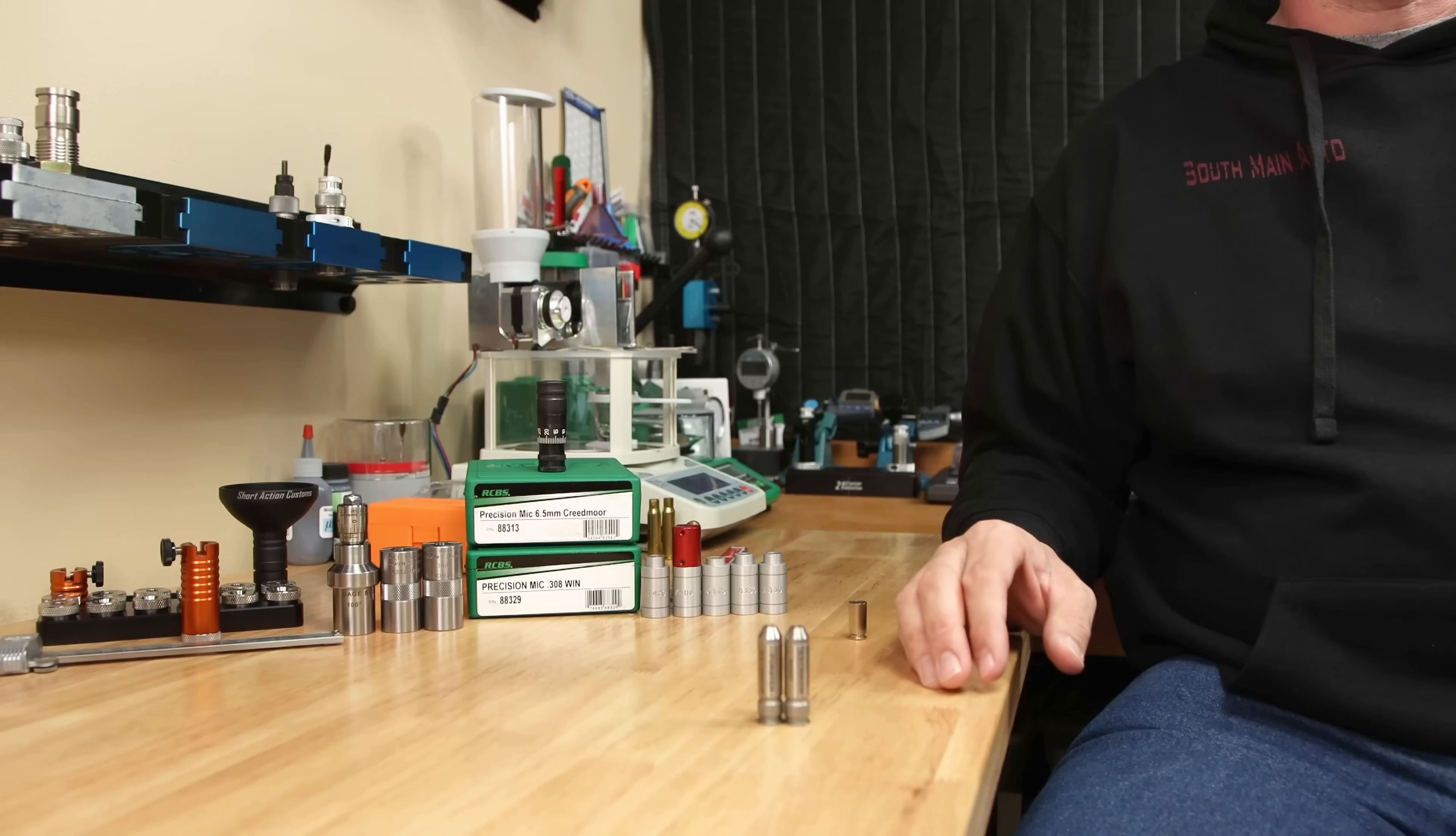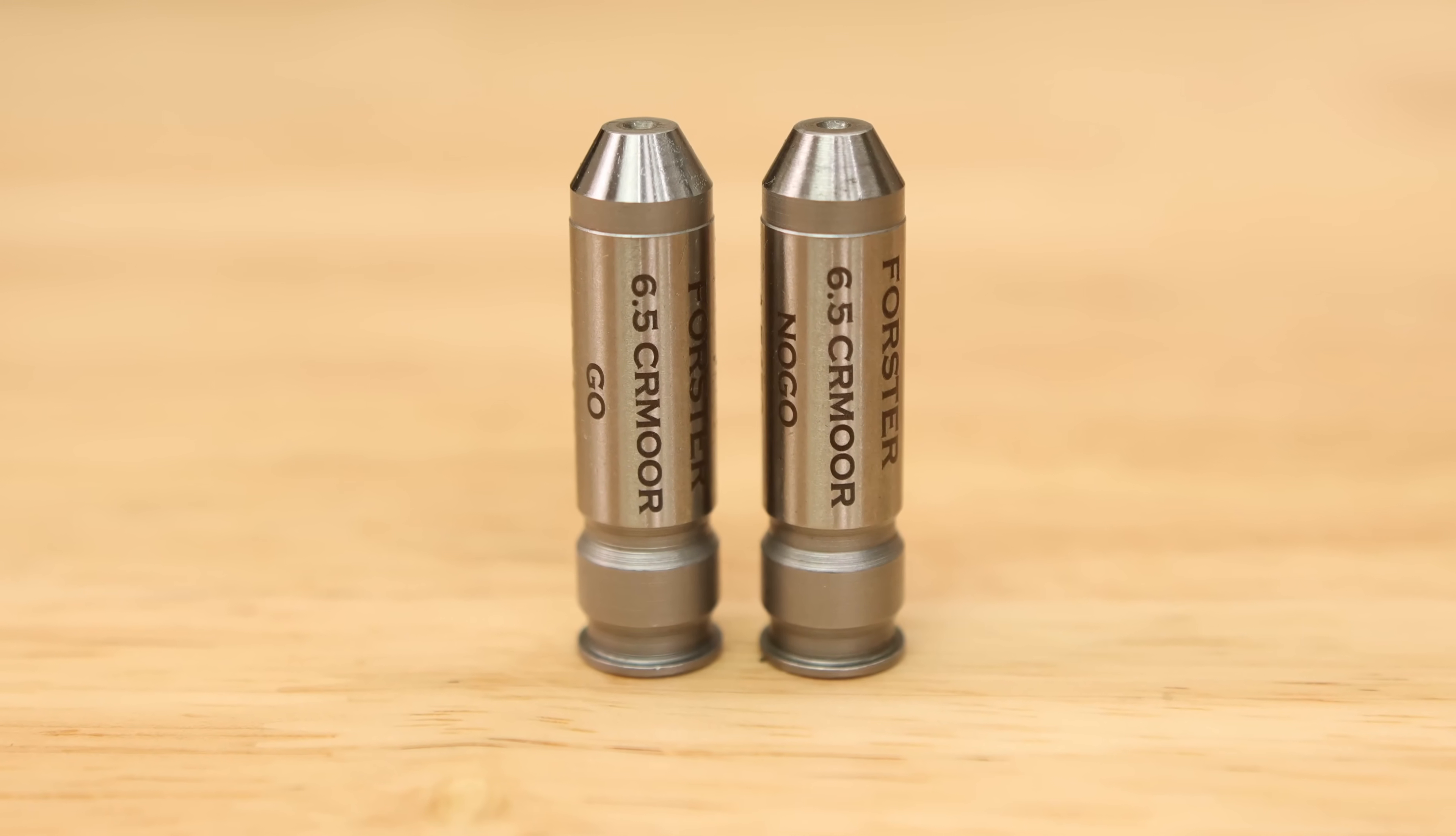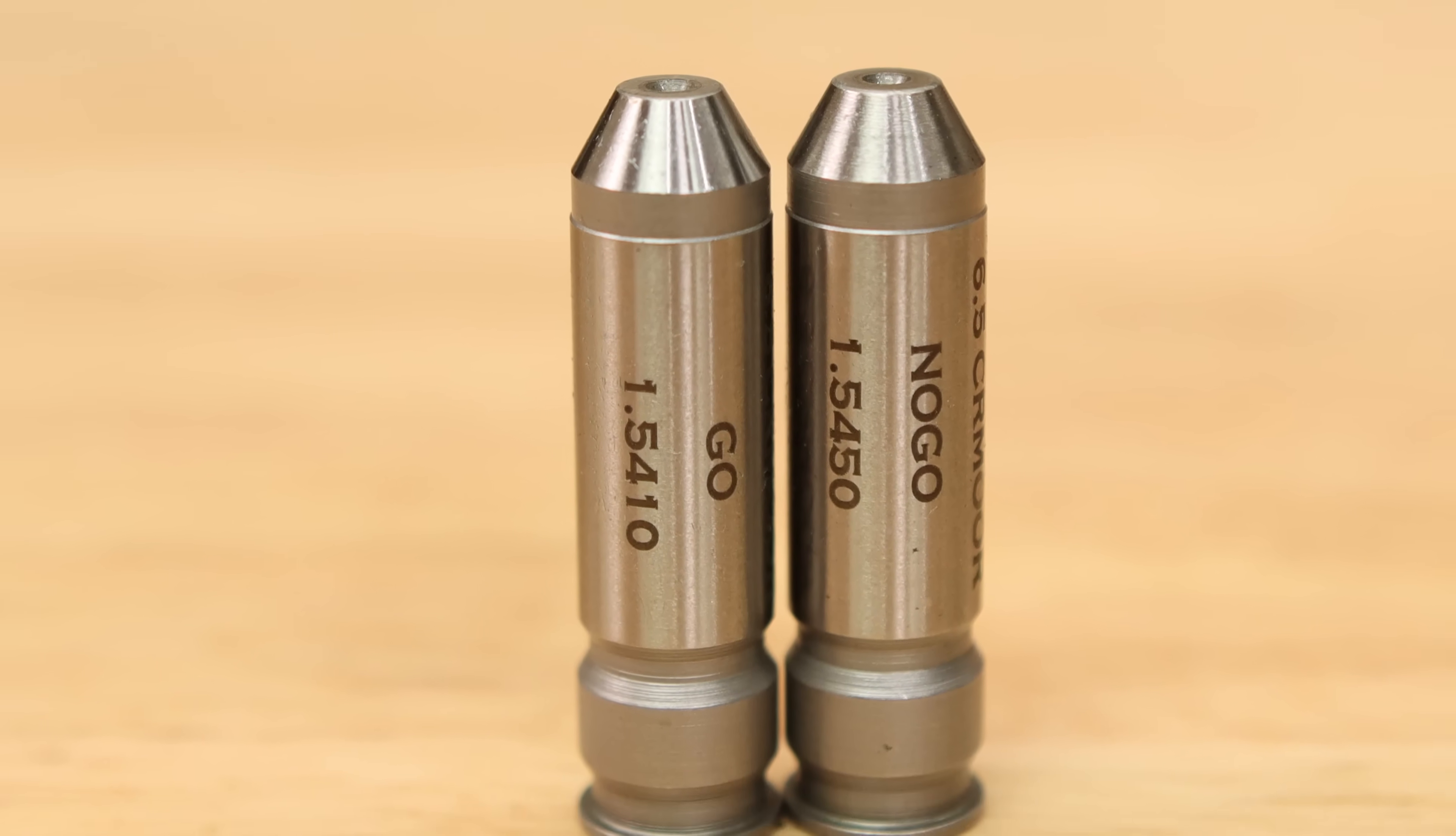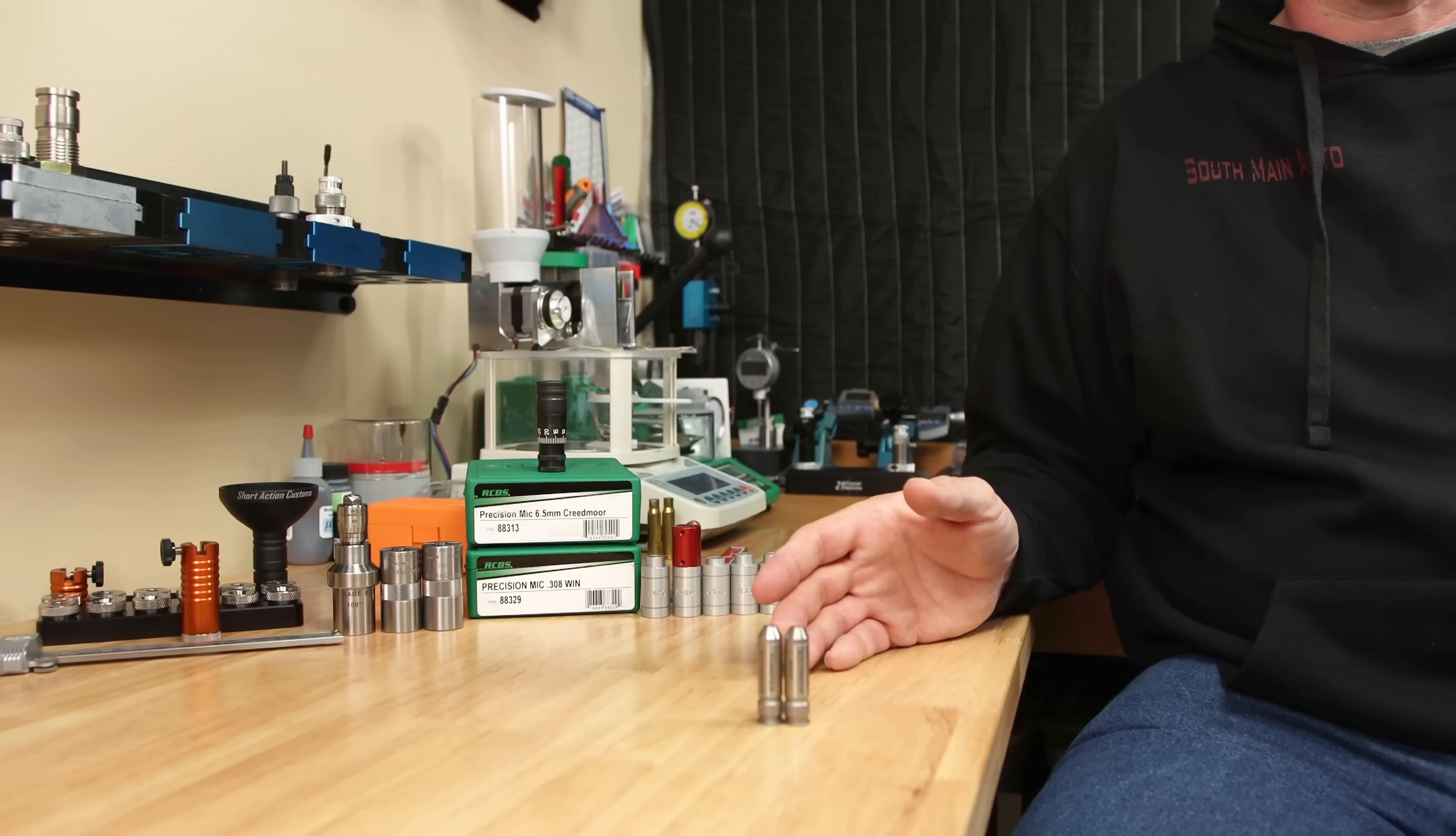For 99% of the community out there, if you're trying to understand headspace, you're likely more concerned with a comparative measurement than one listed on a drawing. You can use headspace gauges, like the ones here from Forrester, to see if it chambers within a certain tolerance. That is why they're called go and no-go gauges. In your reloading, it's more likely that you'll be using some type of device to measure the distance between the case head to a reference point or a datum line on a fired piece of brass.